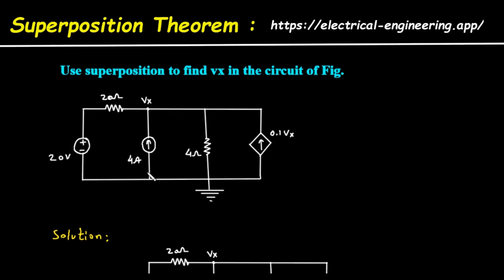Connected to the same node, we have a 4 amp DC current source with the arrow pointing upwards. In parallel with this current source is a 4 ohm resistor, which is connected between the Vx node and ground.